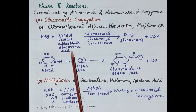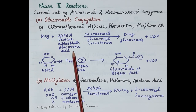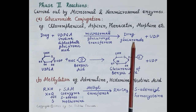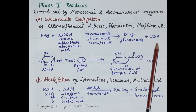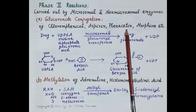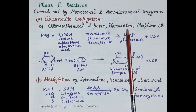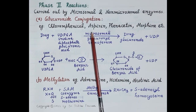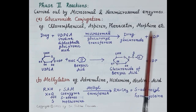Uridine diphosphate glucuronic acid (UDPGA) provides the glucuronic acid, which conjugates with the drug so that a drug glucuronoid is formed and uridine diphosphate is released. Drugs with a hydroxyl group or a carboxylic acid group are conjugated with glucuronic acid — for example chloramphenicol, aspirin, phenacetin, and morphine.